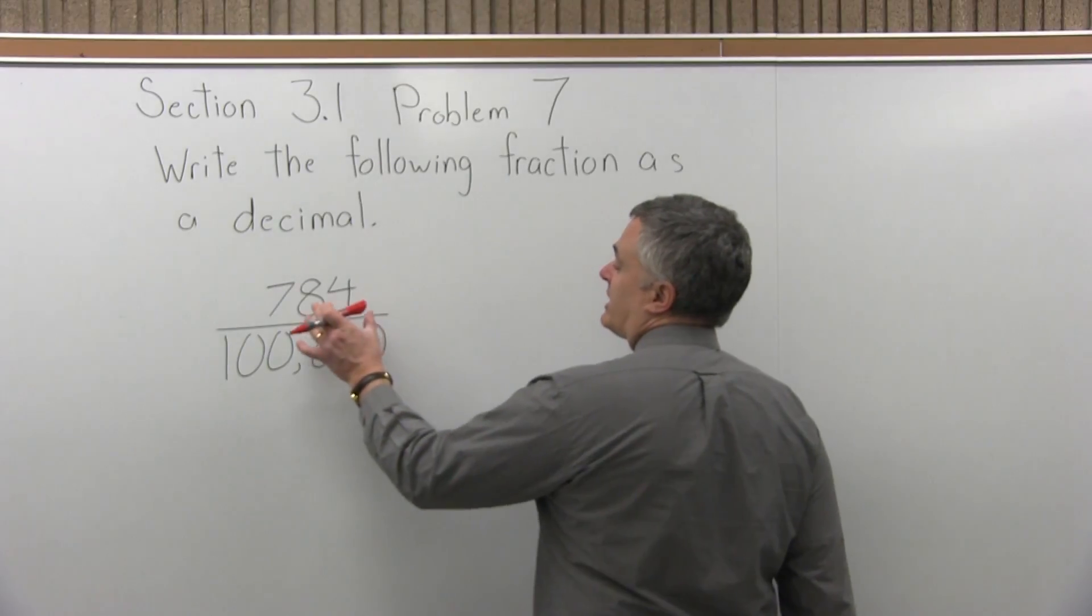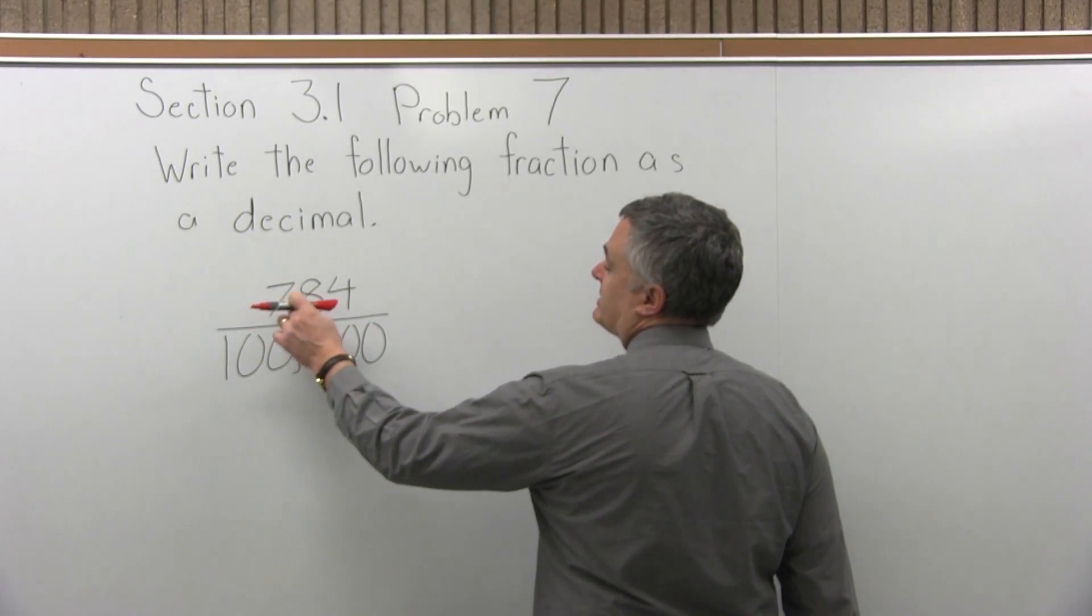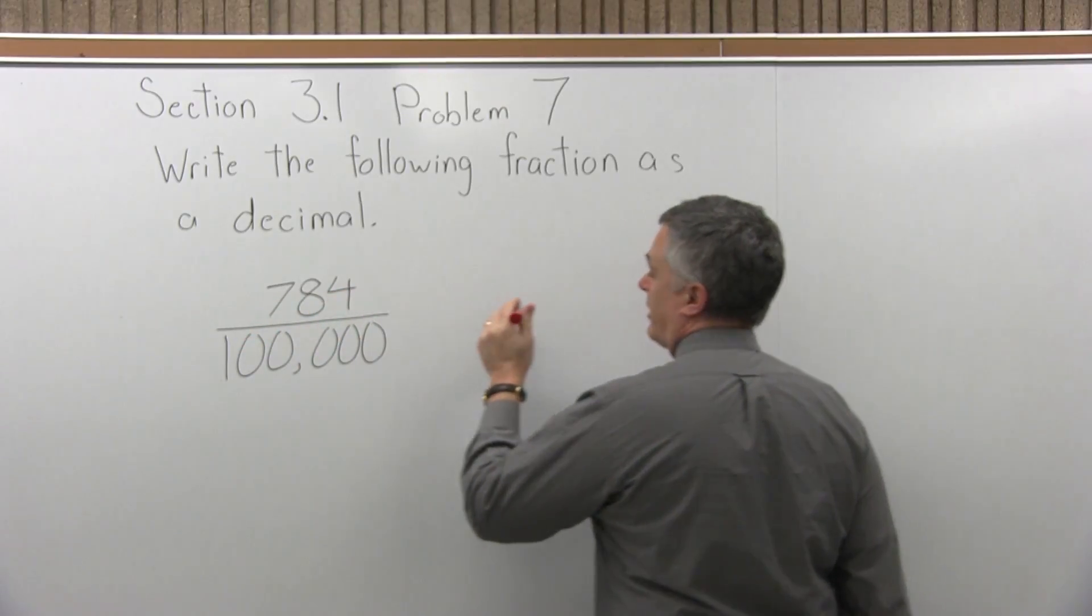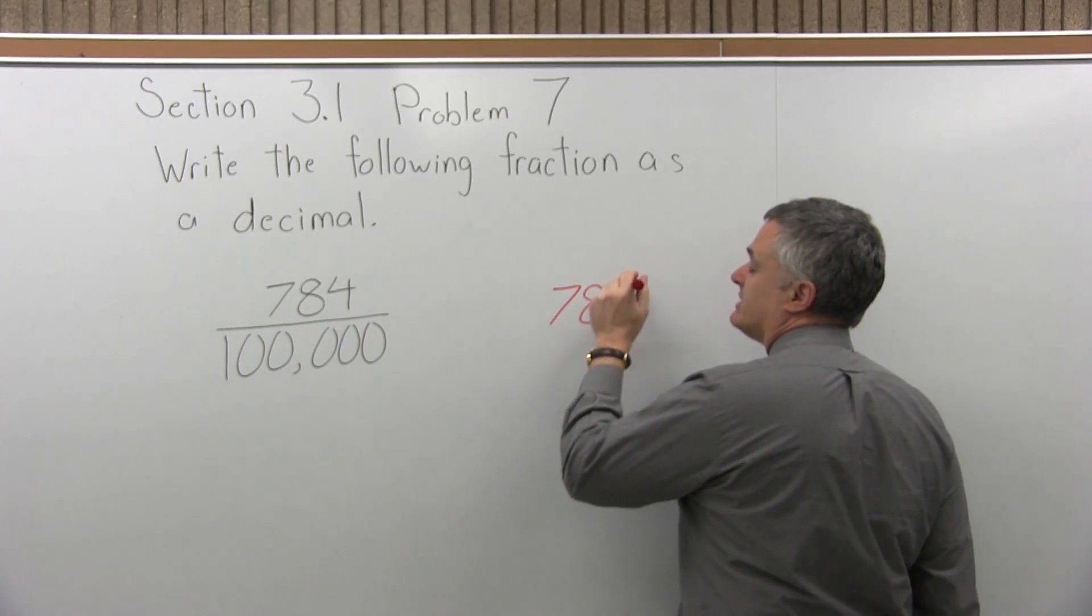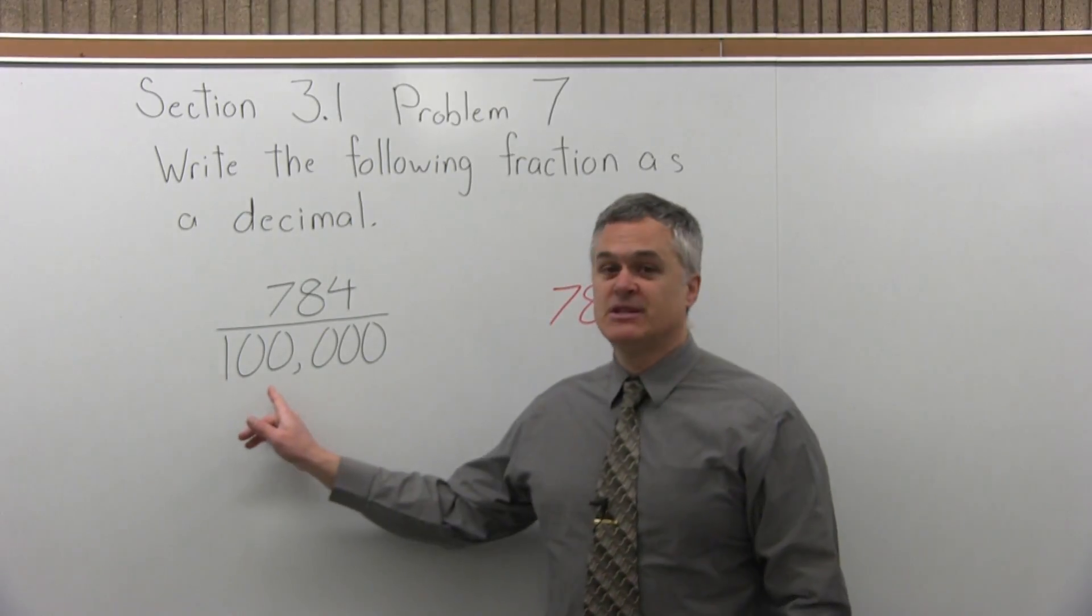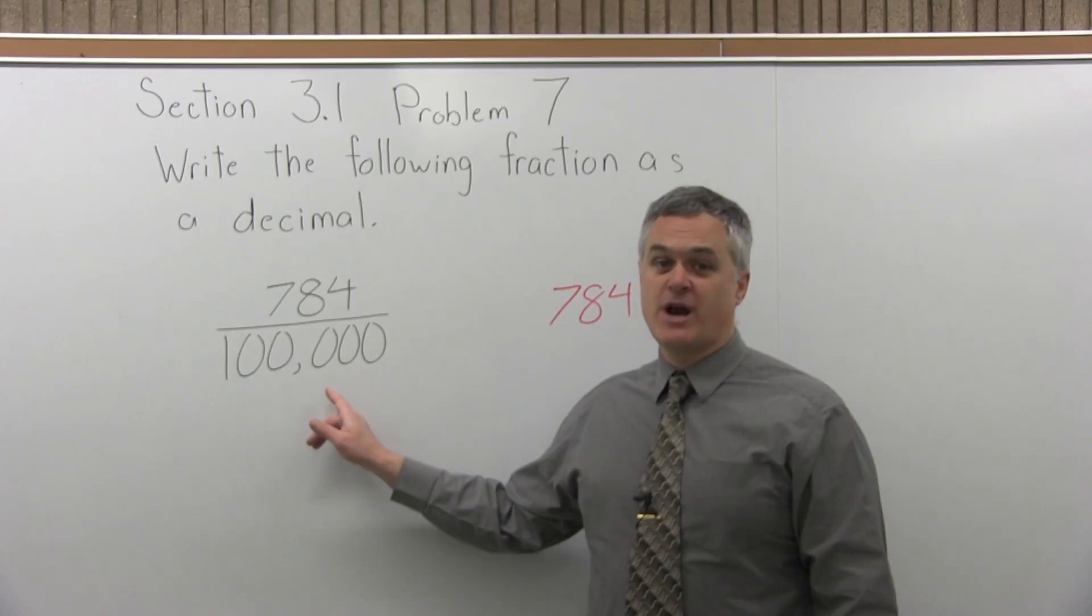So, to write a fraction as a decimal, what's in the numerator will be my decimal in this case. So 784, but I have to write it in such a way that I have as many places after the decimal as I have zeros in the denominator of the fraction.